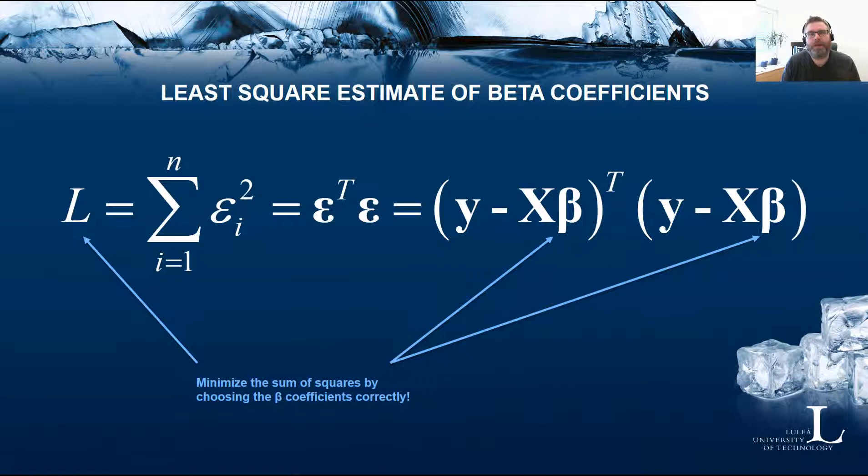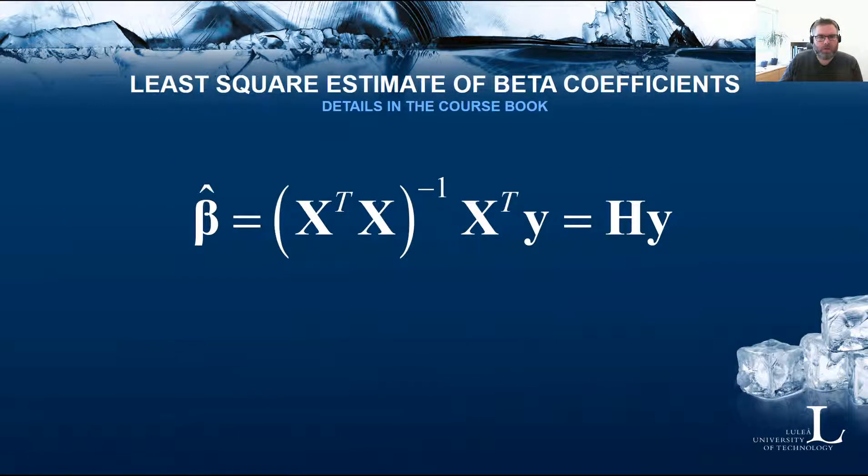The least square estimates of the beta coefficients becomes the beta values that minimizes the sum of squared residuals. The least squared estimate of the beta coefficients, it can be shown that this is the way you estimate them. I will not go into much more details about this, but we'll look at what is sometimes called the hat matrix.